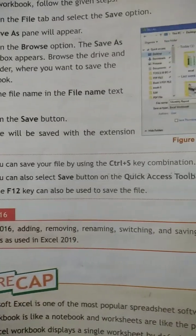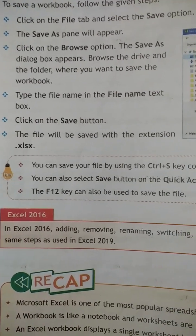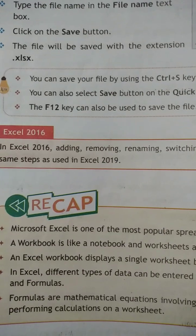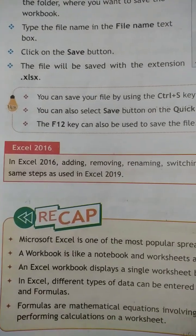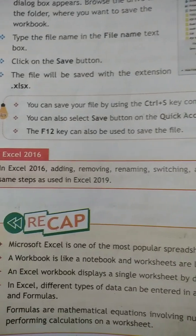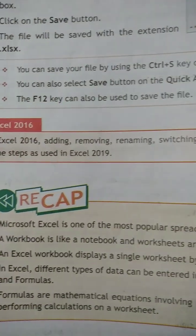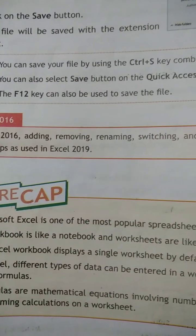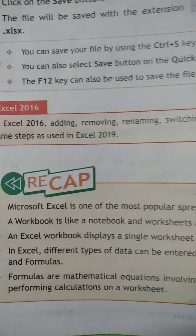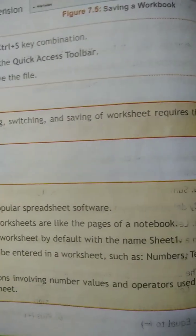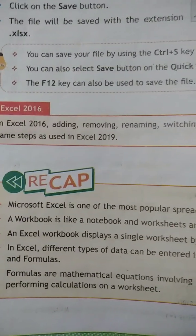Adding, removing, renaming, switching, and saving worksheets requires the same steps in Excel 2016 as in Excel 2019. Let's recap: Microsoft Excel is one of the most popular spreadsheet software programs. A workbook is like a notebook which consists of a number of worksheets like pages in a notebook. An Excel workbook displays a single worksheet by default named Sheet1. Different types of data can be entered in worksheets, such as numbers, text, and formulas or mathematical equations involving number values and operators for performing calculations.